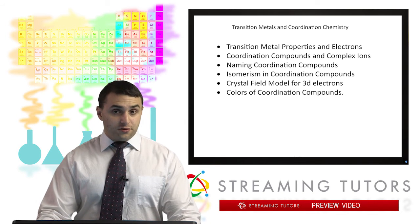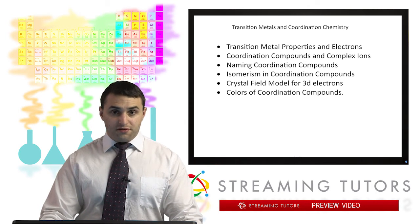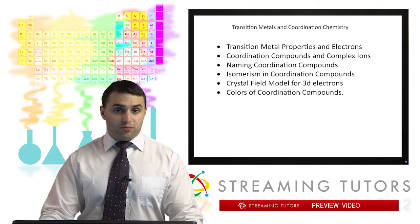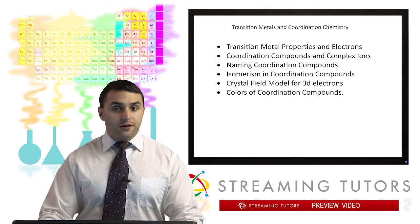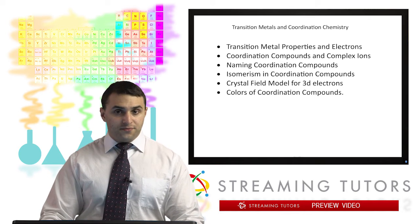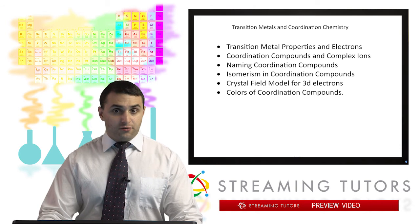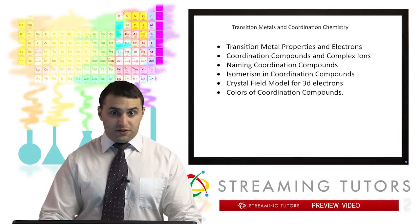So we're going to see what these coordination compounds are. We're first going to briefly review the transition metals, how their electronic configurations and properties work out, and then we're going to go into naming these kinds of compounds, the isomers they can form, and then some of the electronic structure of these compounds, and we'll see how that applies to some of the properties that they exhibit.